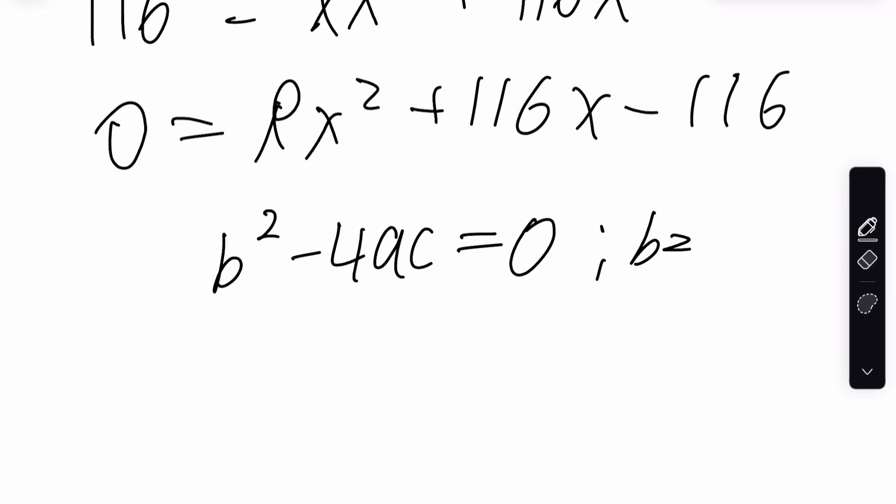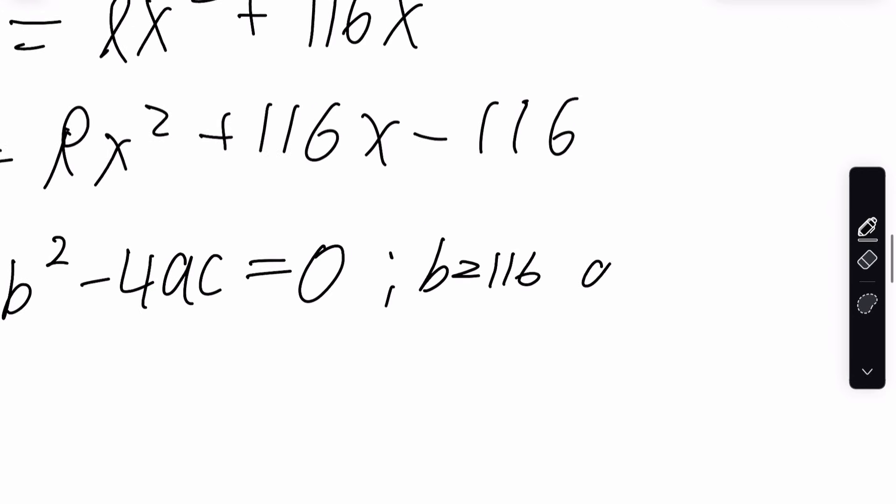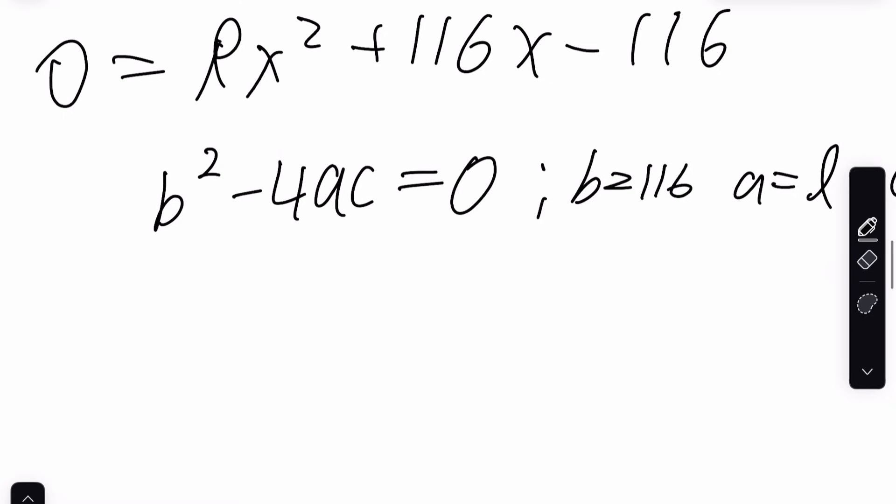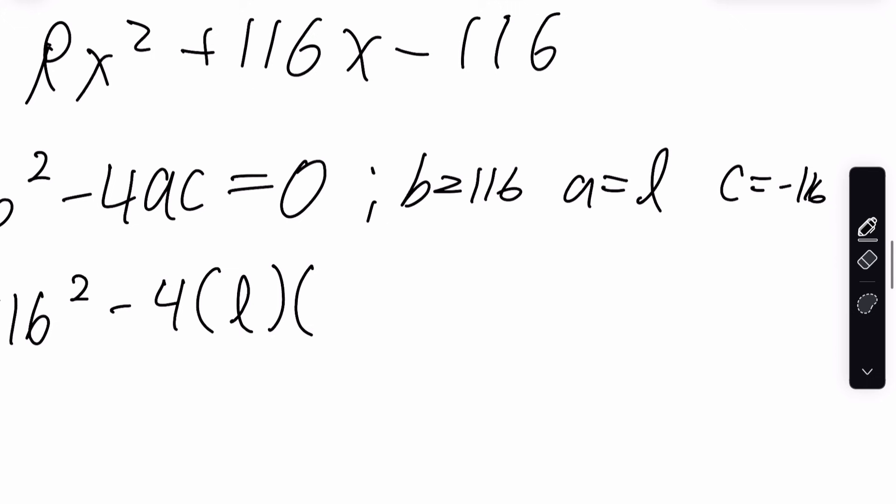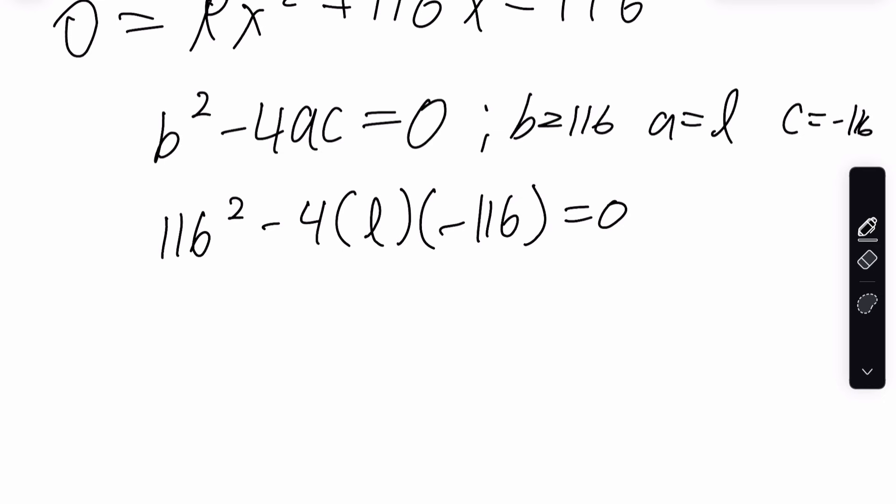In this case, B equals 116, A equals L, right? Because this is the A value, and then C equals negative 116. Here's what we're going to do. 116 squared minus 4L negative 116 equals 0. I'm going to show you a trick on Desmos really quick. So, let's hop over there.